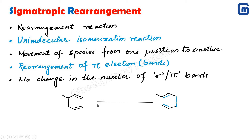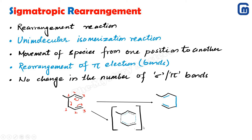In sigmatropic rearrangement, we assign numbers to the atoms in the molecule. For example, in the given reaction, numbering starts from the position where the bond is breaking. After bond breakage in a specific direction, older bonds break and new bonds (shown in blue) are generated. Since a bond between the third and third carbon is formed, this type of sigmatropic rearrangement is called a [3,3] sigmatropic rearrangement. The details will be discussed in coming lectures.